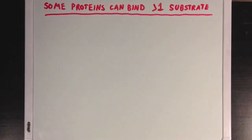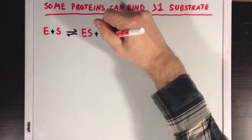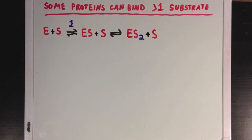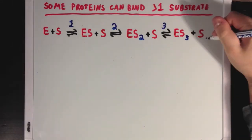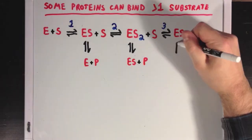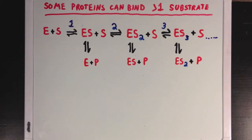Now, the first thing I want to talk about is that some proteins can bind more than one substrate, and not all enzymes have just one active site. So, E plus S can form ES through reaction 1, but some enzymes can react with another molecule of substrate to form ES2 through reaction 2, and again to form ES3 through reaction 3, and so on. These enzymes can form product at any stage of this process, no matter how many molecules of substrate are bound.